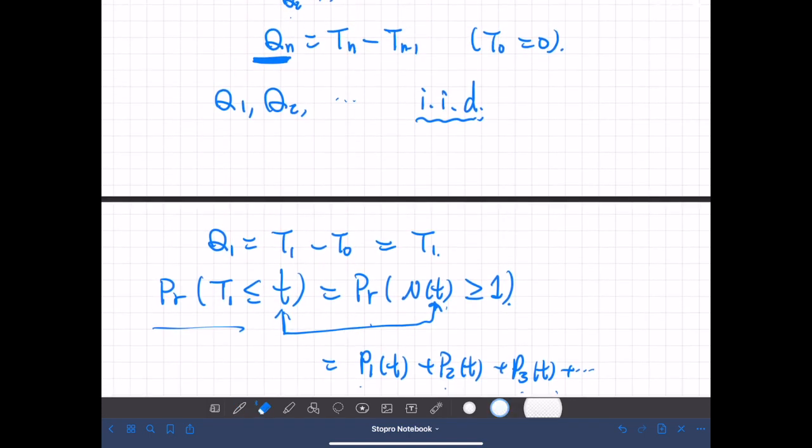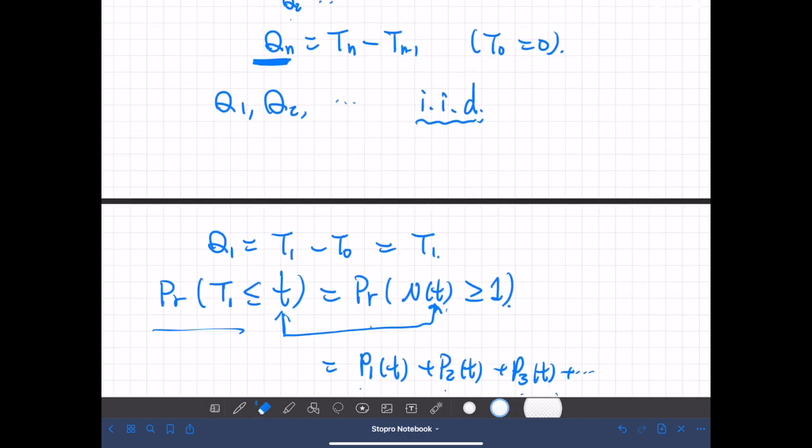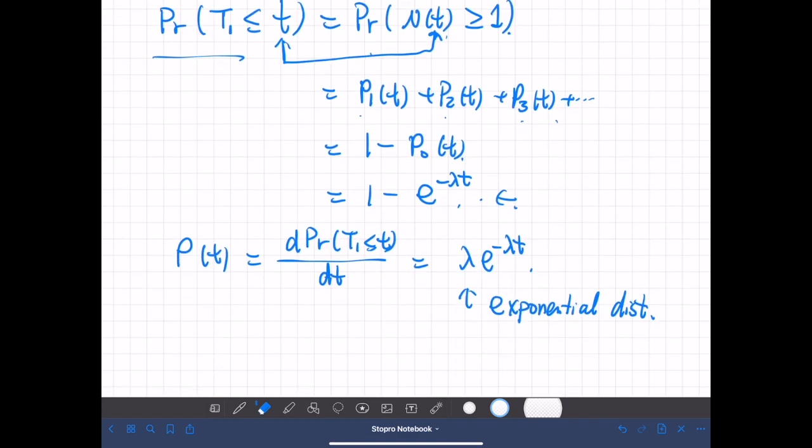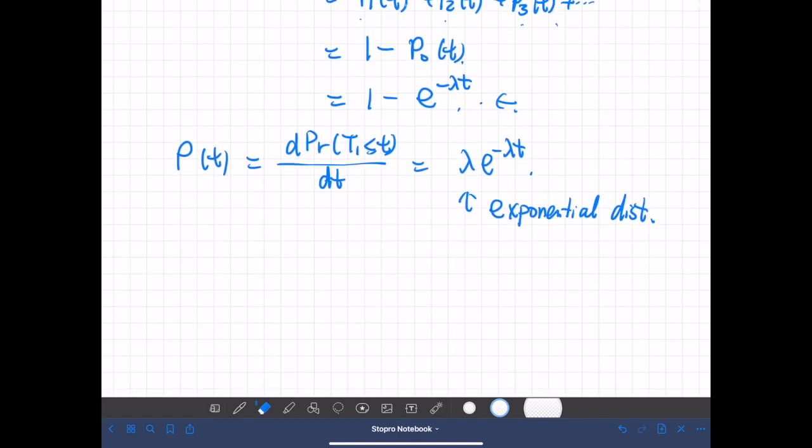So this means q1, q2, q3, and so on, they all follow the same exponential distribution. So this gives a hint as to how to simulate a Poisson process.